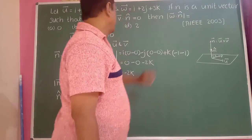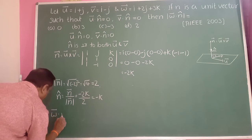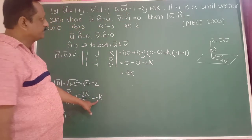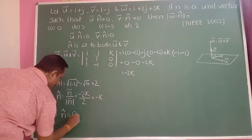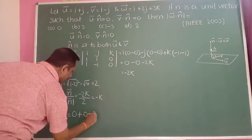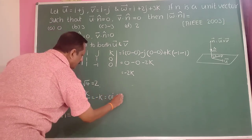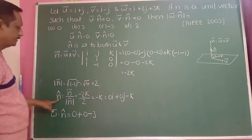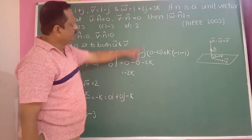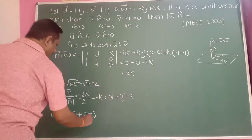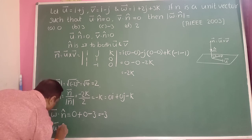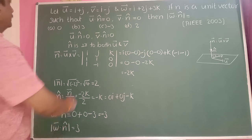Now find w̄ dot n̂. w̄ has no i or j terms — wait, w̄ is (1, 2, 3). n̂ is 0i plus 0j minus k. So 1 times 0 is 0, plus 2 times 0 is 0, plus 3 times minus 1 is minus 3. Therefore w̄ dot n̂ equals minus 3, and the modulus of w̄ dot n̂ is 3.